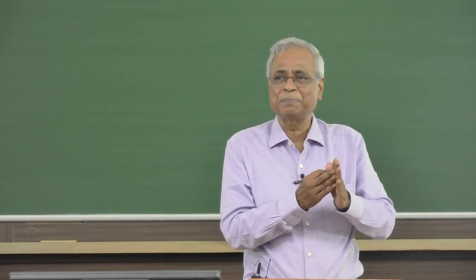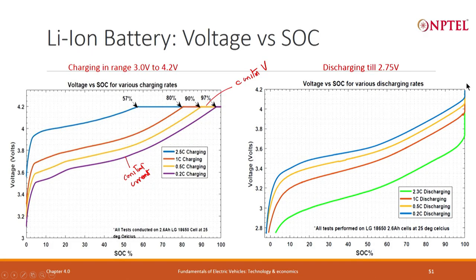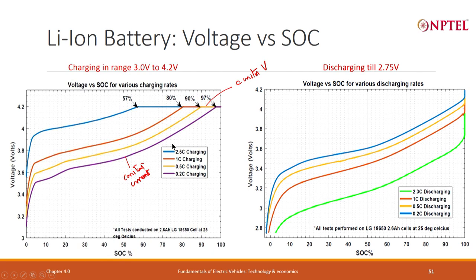Voltage changes with the rate of charge or discharge and changes during charging and discharging. A battery which is 100 percent full — if you start discharging immediately at 2.5C, the voltage immediately falls. If you take that voltage and try to estimate SOC, you will be totally wrong. Similarly, during charging, depending on the current, it changes very significantly. The same voltage of 4 volts could correspond to SOC near 100 on one curve, or SOC near 0 or 80-85 percent on another. Voltage versus SOC cannot be blindly used — and yet it is a very important parameter.